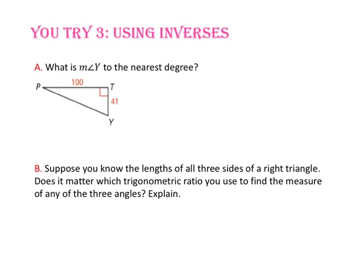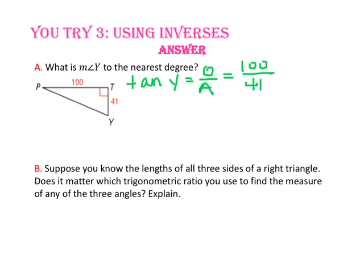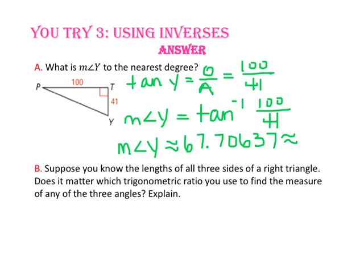Pause the video and do U-try number 3. For part A, what is the measure of angle Y to the nearest degree? We know the length of the side opposite angle Y and the length of the side adjacent to angle Y, so let's use the tangent ratio. Since we're looking for the measure of an angle, we'll use the inverse of tangent. Use your calculator to type in 100 divided by 41, hit the equal button, the green second key, and the tangent button. Rounded to the nearest degree, the measure of angle Y is approximately 68 degrees.